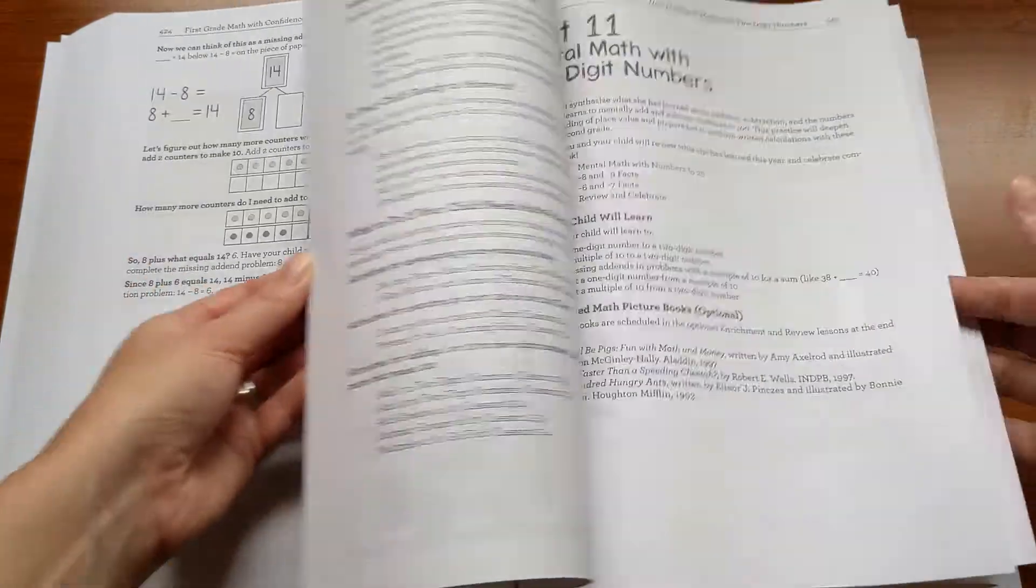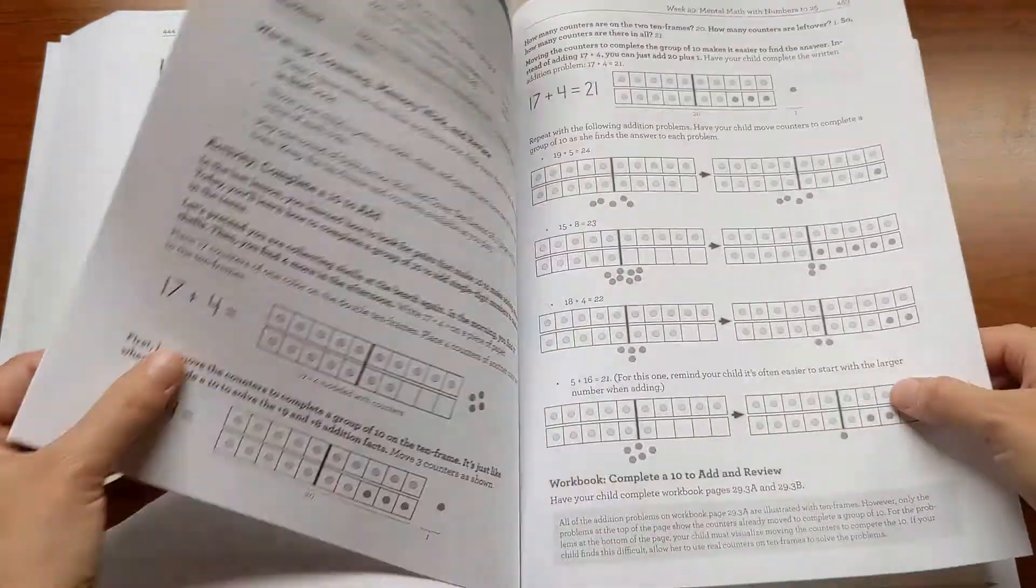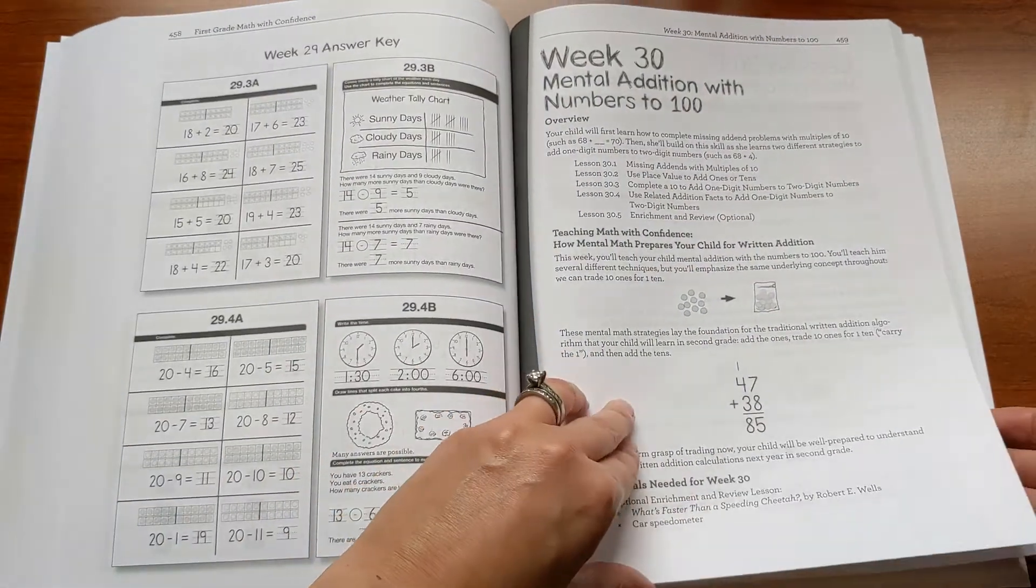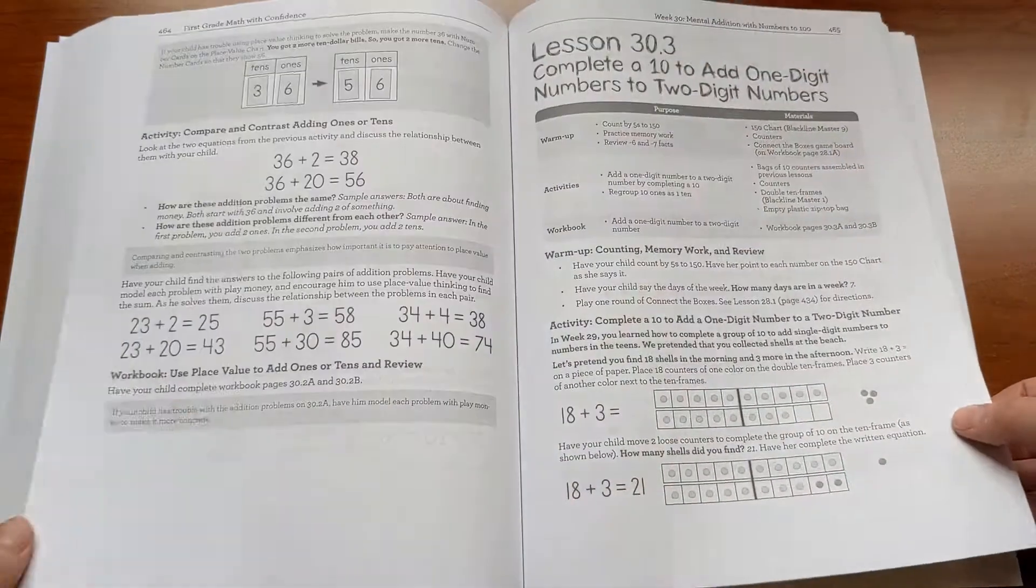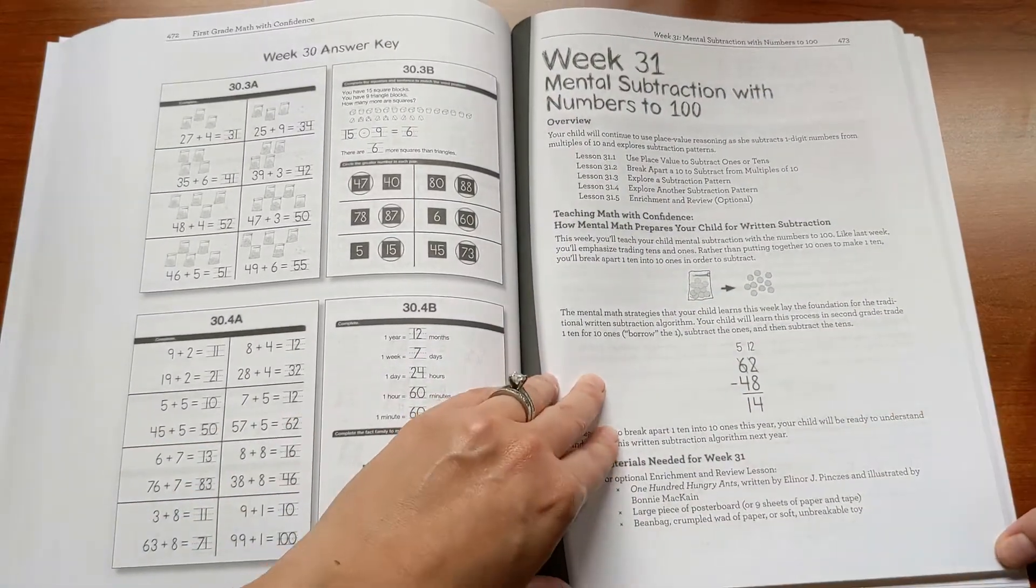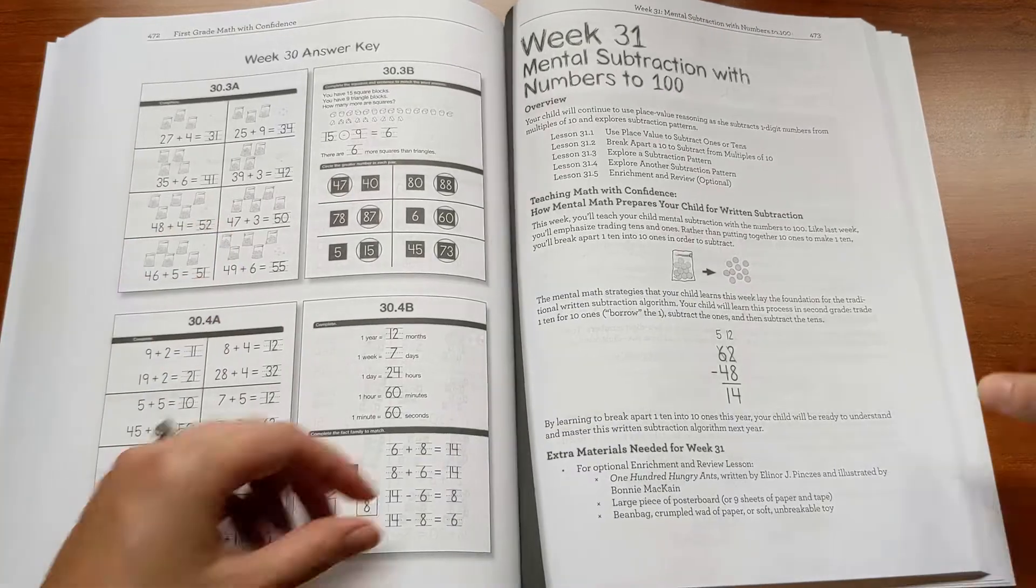And then get into the subtraction facts and the more challenging facts. And then you'll end the year with mental math with two-digit numbers. And this will lay a great foundation for second grade then to learn the written process for addition and subtraction with two-digit numbers. That way they'll have the conceptual understanding that allows them to learn that process.